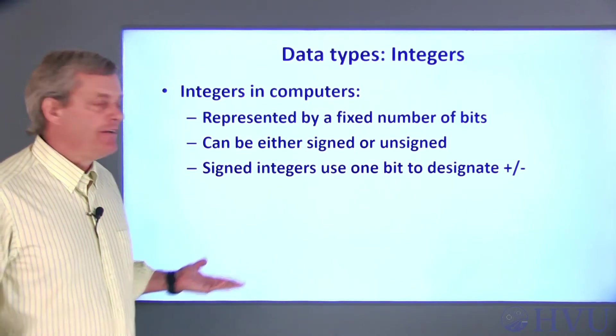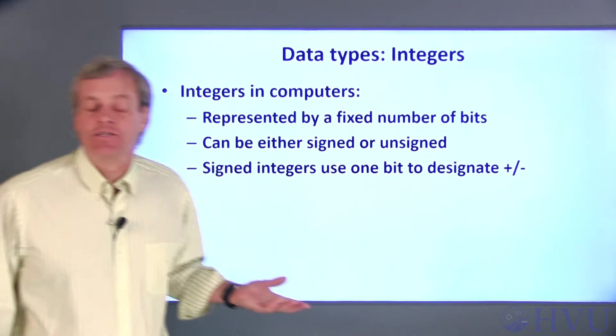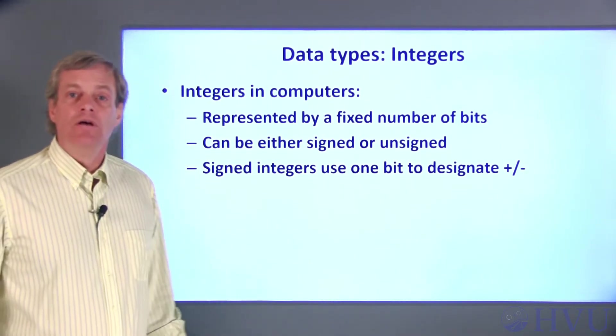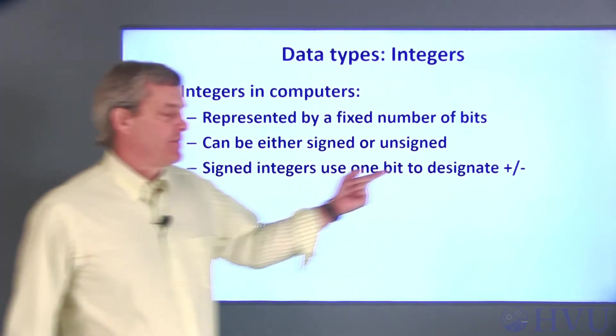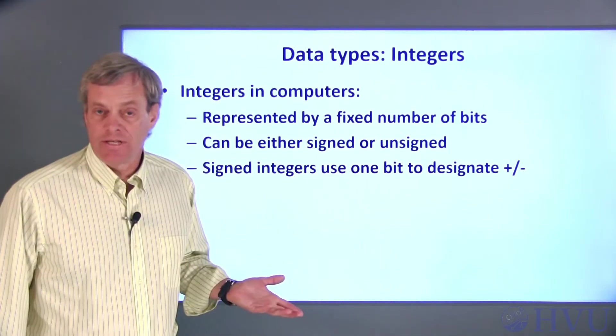I can also specify an integer as being either signed or unsigned. Signed integers can be either positive or negative, while unsigned integers are always positive. To represent a signed integer, one bit is used to denote the sign, positive or negative, and the other 7 bits represent the number itself.